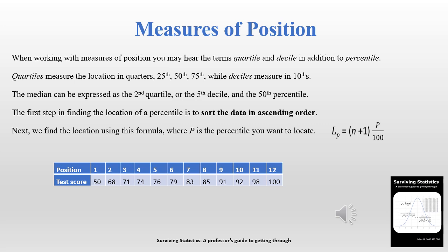In order to find the location — and we're talking about location to start with — we first sort the data in ascending order, then we use the formula on the screen to find the location of whatever percentile you're looking for. It's (n + 1) times p, the percentile you're looking for, divided by 100 — a relatively simple formula.